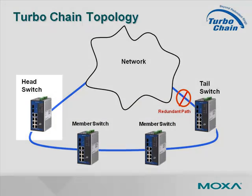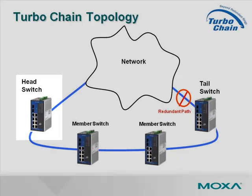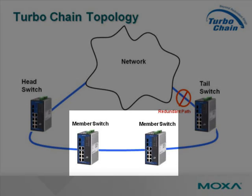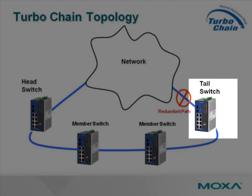There are three roles in the TurboChain topology. The first role is head — the head switch is the primary connection to the rest of the network, connecting to the network and a member switch. The second role is the member switch, which resides between the head and the tail switches. The third role is the tail switch, which is the redundant link to the rest of the network.